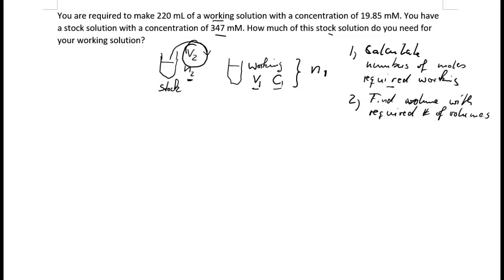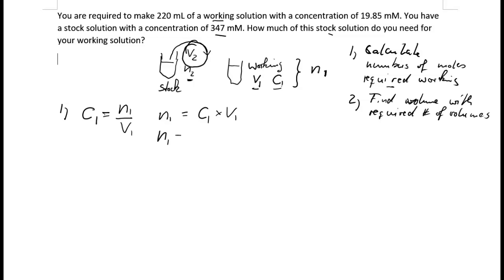Let's get started. First, calculate the number of moles required in the working solution. We can use our well-known concentration equation: c1 equals n1 over v1 — that is for our working solution. Making n the subject gives us n1 equals c1 times v1.